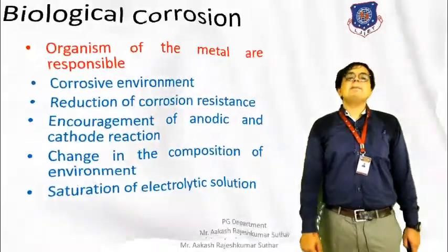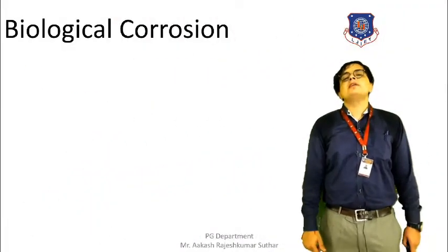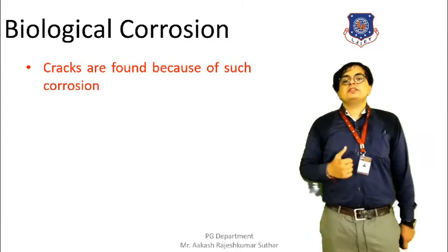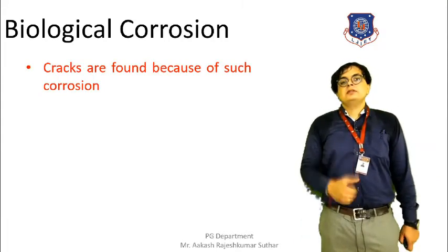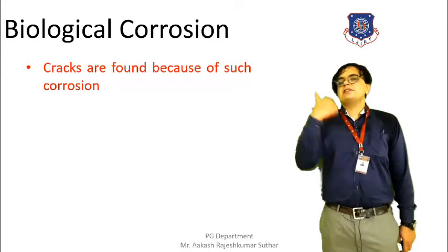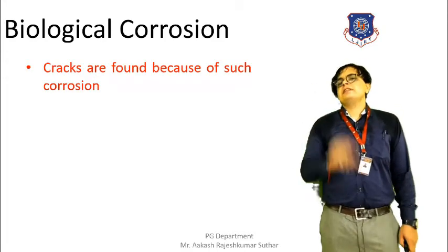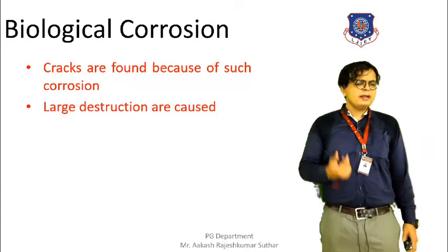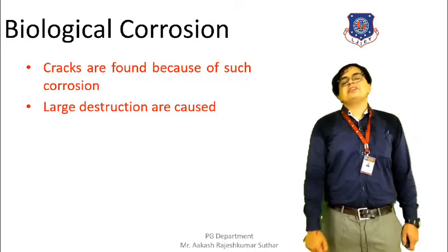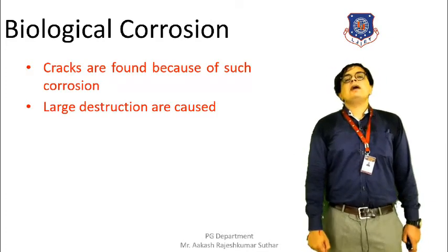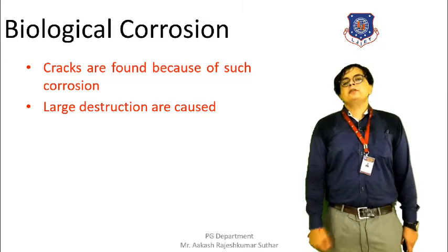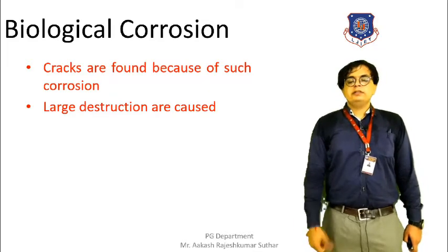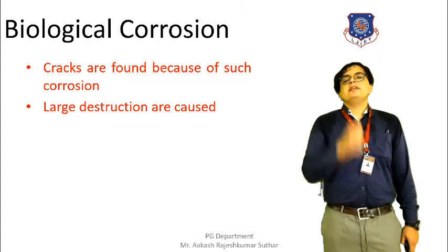As a result of biological corrosion, cracks will be found on the surface. These cracks cause the load-carrying capacity of the metal to be reduced. A large amount of destruction can occur because of biological corrosion. This is how biological corrosion occurs and why it is dangerous.